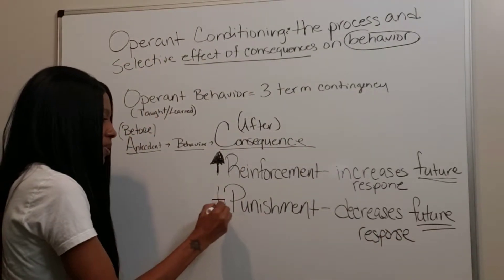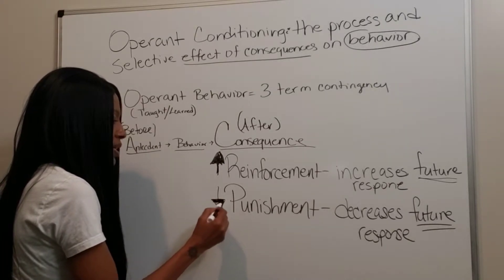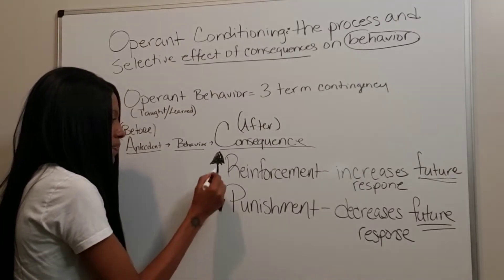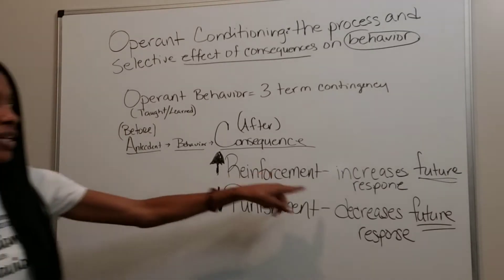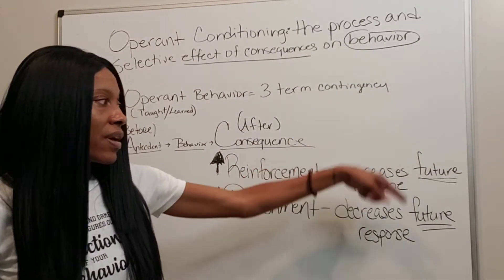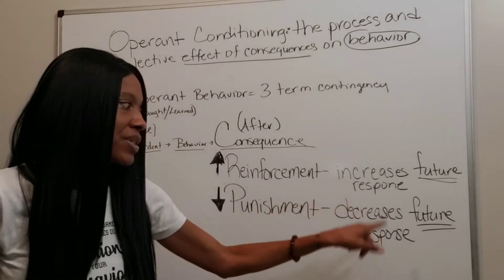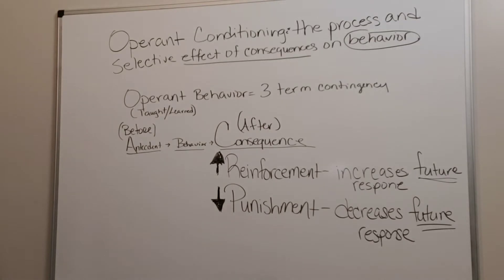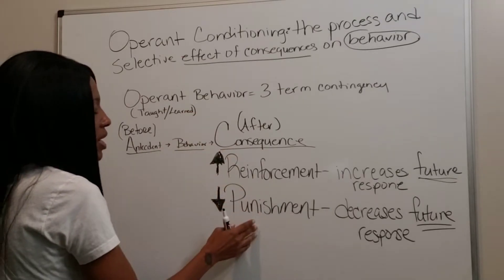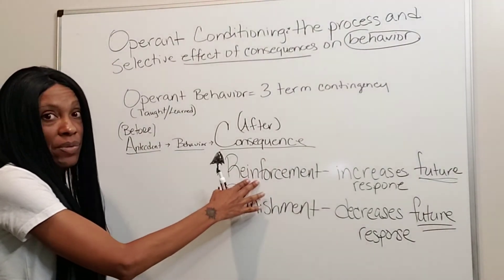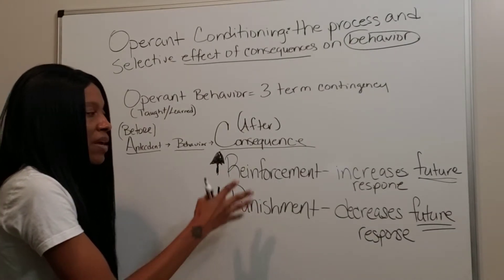These are terms you're going to need to be familiar with. We're going to go into more detail as we get into the actual task list. But just remember that when we say reinforcement, we're talking in regards to an increase of the future behavior, and punishment decreases future responses. They fall under the consequence because the behavior has to happen first. If a behavior occurs and the consequence is reinforcement, most likely the behavior will happen again in the future. If they come into contact with punishment, most likely the behavior will decrease in the future.